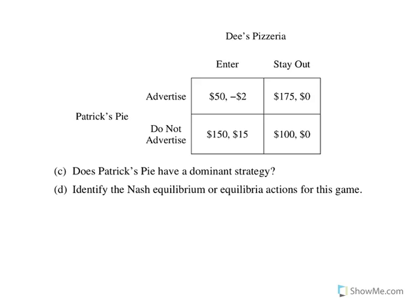On to C. Does Patrick's Pie have a dominant strategy? I'll show you the way I do it. If I'm Patrick and Dee decides to enter, I either get $50 or $150, so I would go with $150 — I'll circle that in red. If Dee decides to stay out, I either get $175 or $100, so I go with $175. Because Patrick advertises when Dee stays out but does not advertise when Dee enters, he does not have a dominant strategy. So the answer to C is no.